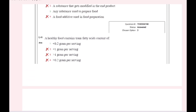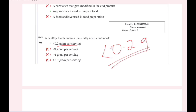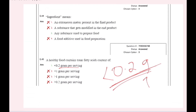A healthy food contains trans fatty acid content of 0.2 grams. We have not learned — it is called trans fatty acid.